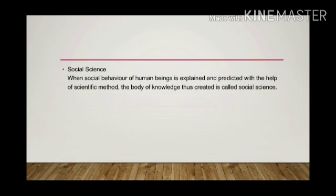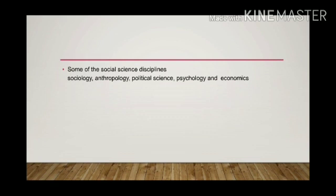Now let us move on to social science. What is social science? When social behavior of human beings is explained and predicted with the help of scientific method, the body of knowledge thus created is called social science. Here there is connection with the society. Everything that can be studied we can divide into social science or natural science. The study of the external natural world is termed as natural science and the study of human behavior using the scientific method can be called as social science.